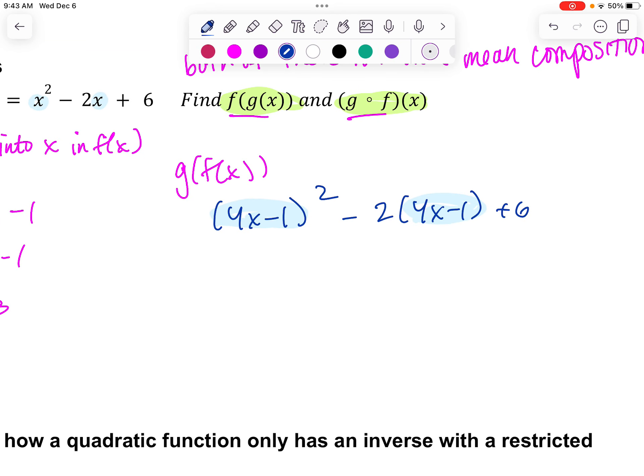And then now it's just a matter of simplifying. So super common mistake people make is right here. We just write 16x squared plus 1. That's wrong. We have to make sure that we foil it out or use our perfect square trinomial rules. So we'll have 16x squared minus 8x plus 1 minus 8x plus 2 and then plus 6. And then when we combine all our like terms, we get this equation here.